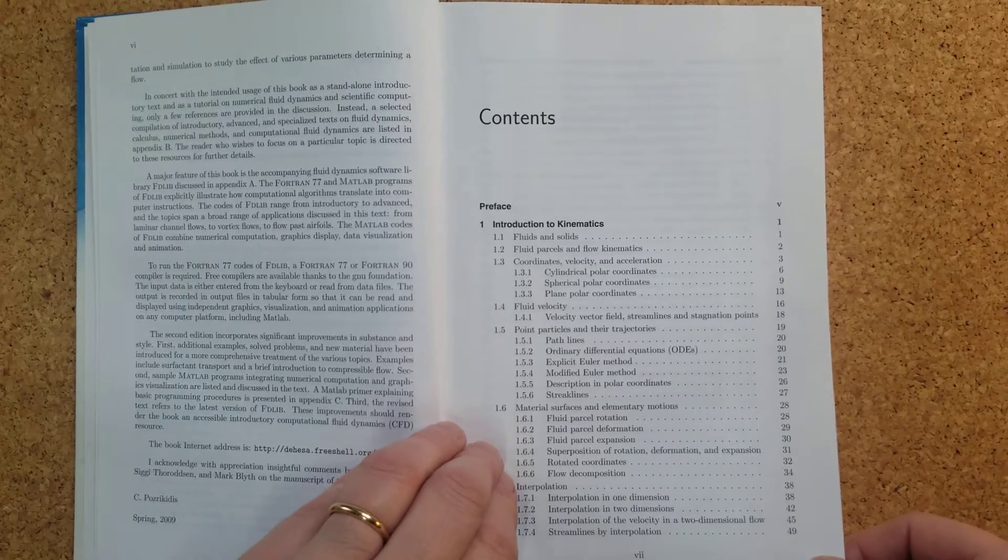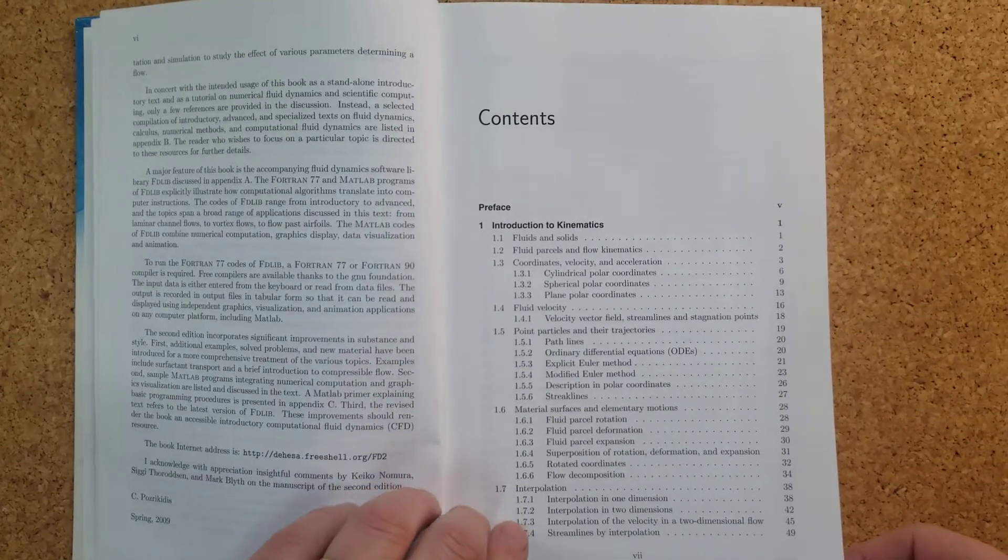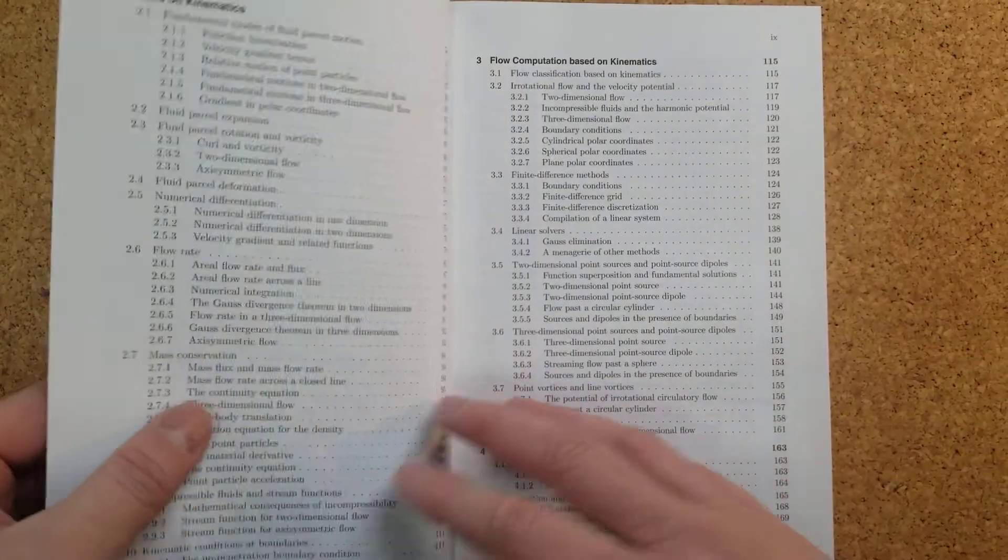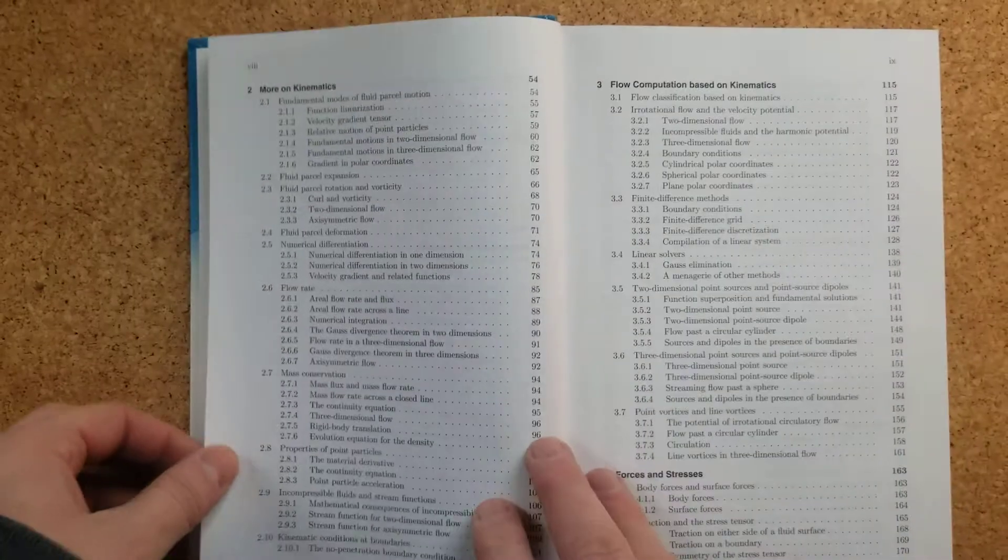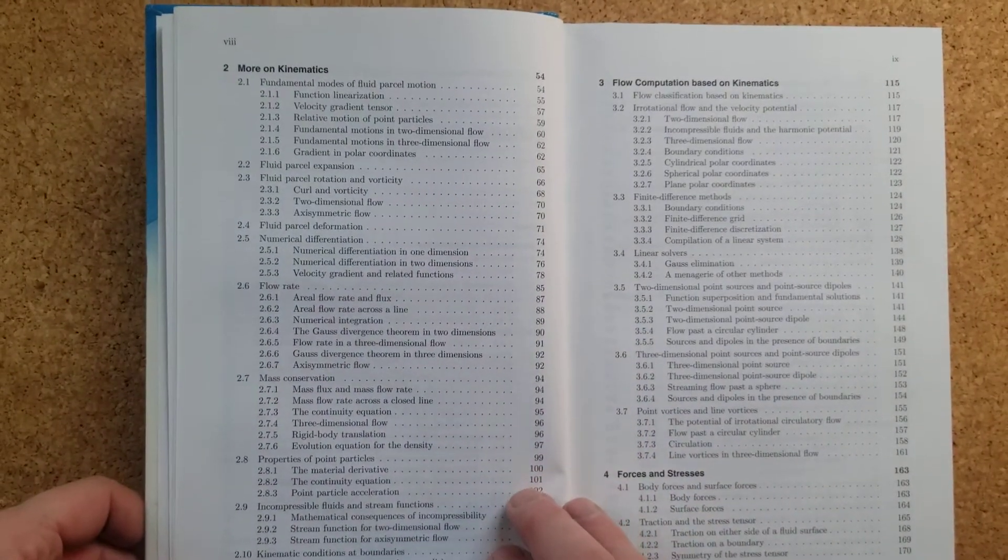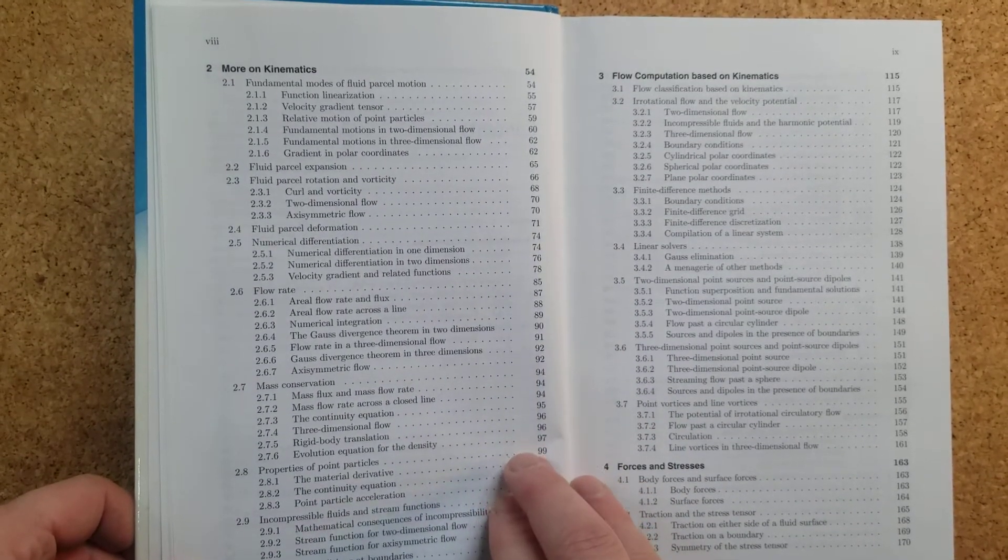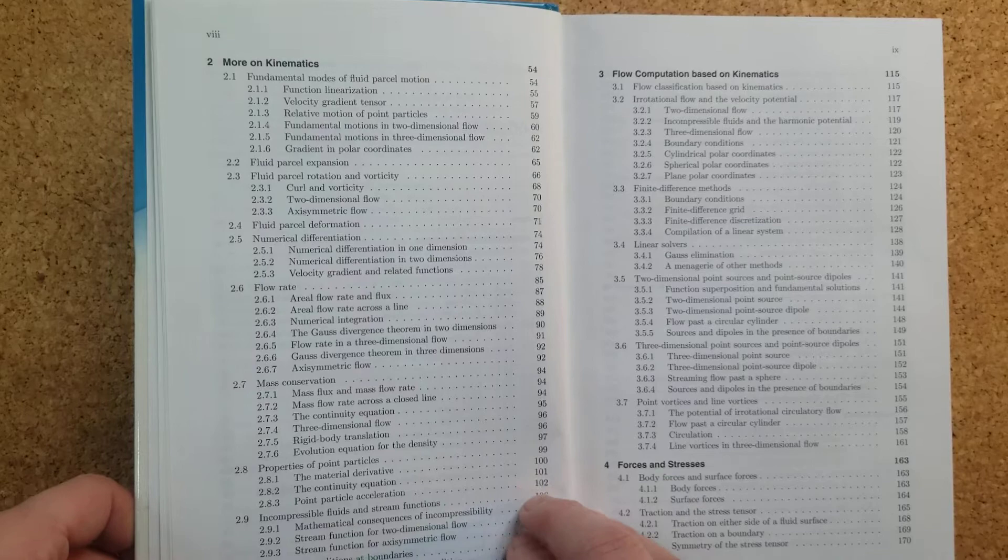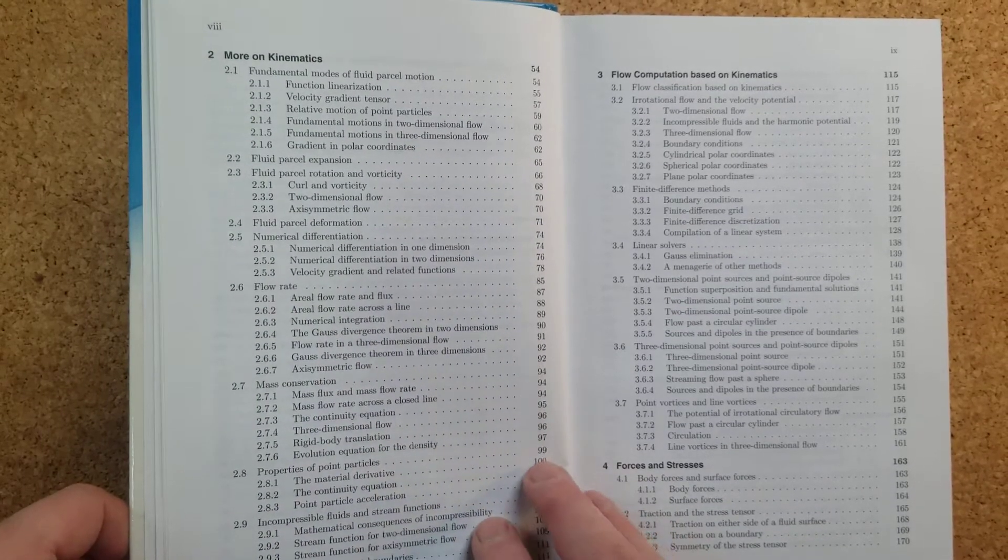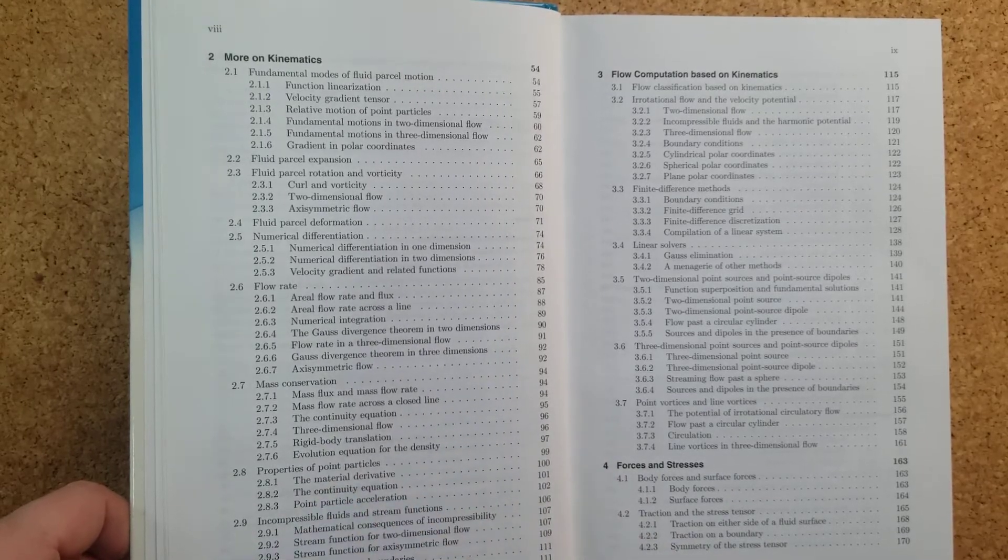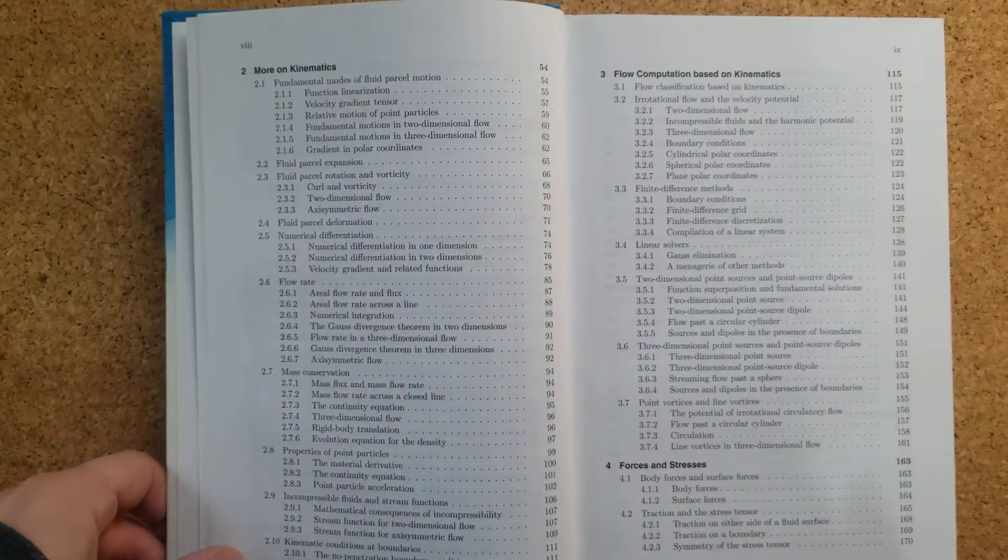So it does all the review of definition of velocity, trajectories and material surfaces and acceleration. Even the second chapter is dedicated to kinematics. And then it starts going slightly more into specific concepts like for example, flow rate, mass conservation, properties of point particles, incompressible fluids and stream functions.